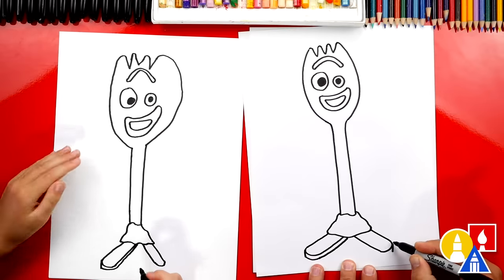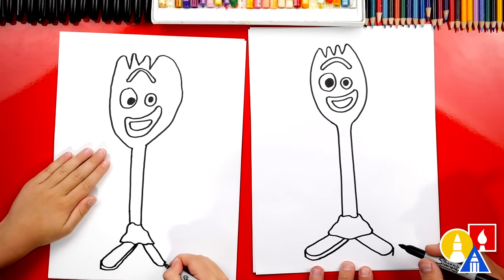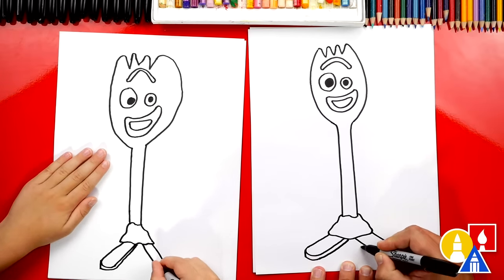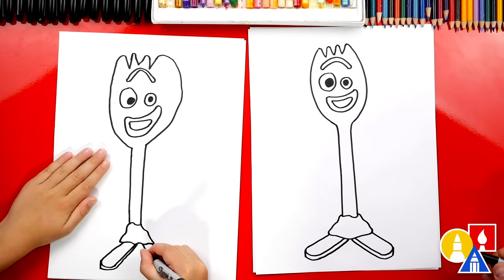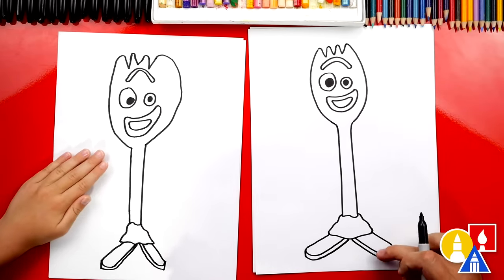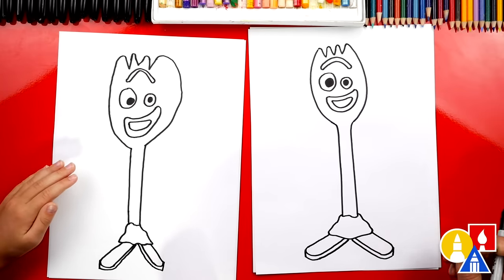And we'll do the same thing over here. Draw a straight line down on the right side. Then we're going to draw a curve that comes around and matches. He also has a little rainbow here, but we're going to do that later when we're coloring.